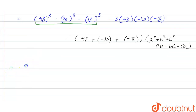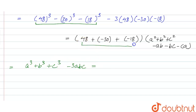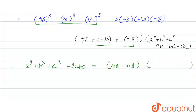Now, a³ + b³ + c³ − 3abc equals (a + b + c) times the rest. Since a + b + c = 48 − 30 − 18 = −48 + 48 = 0, we get zero times the whole remaining term. Zero multiplied by anything is always zero.